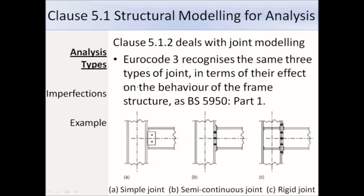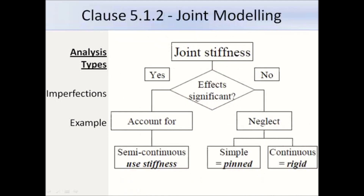Clause 5.1.2 deals with joint modelling and tells us that the effects of behaviour of the joints may generally be neglected except where the effects are significant, for example when using semi-continuous joints. Eurocode 3 recognises the same three types of joints in terms of their effect on the behaviour of the frame structure as BS 5950 part 1. At the bottom is a diagram showing the different types of joints: a simple joint, a semi-continuous joint and a rigid joint. A flow chart shows when we should account for the effects of joints. For simple (pinned) and continuous (rigid) joints we can neglect the effects, but for semi-continuous joints we need to consider them.